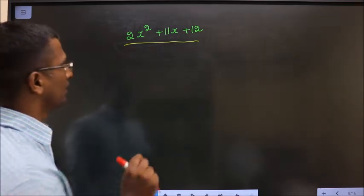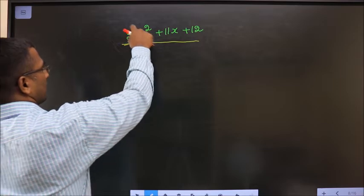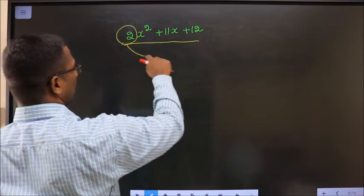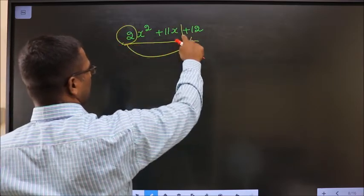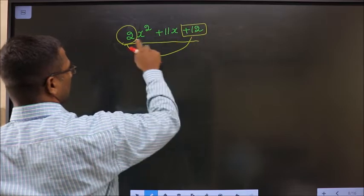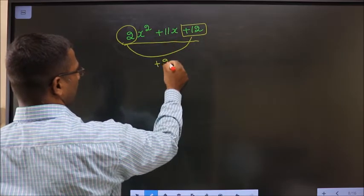In step 1, whatever you have here should be multiplied to the constant, that is plus 12 in this case. So 2 into plus 12 is plus 24.